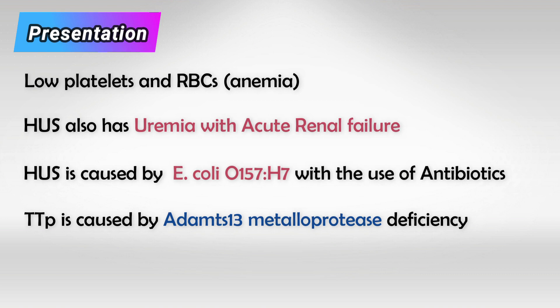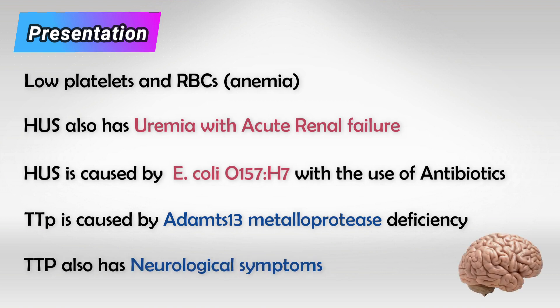The hallmark differentiating feature between these conditions is the neurological symptoms found in TTP, so we might see confusion with altered mental status, paresthesia, or weakness. The hallmark in HUS is uremia with acute renal failure.